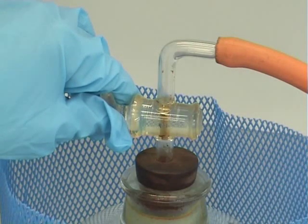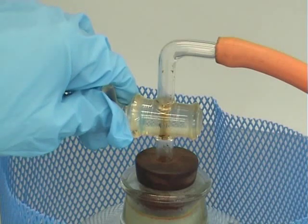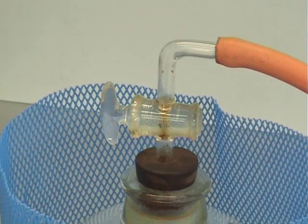Once the hissing stops, you can open the tap all the way. You can then leave the desiccator like this to dry.